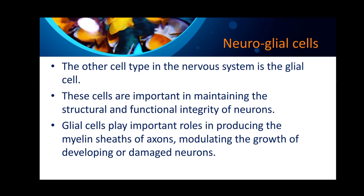In the nervous system, there are two types of cells generally found: the first is the neuron and the second is the neuroglial cell. The other cell type in the nervous system is the glial cell, which is also important for the nervous system. These cells are important in maintaining the structural and functional integrity of neurons.